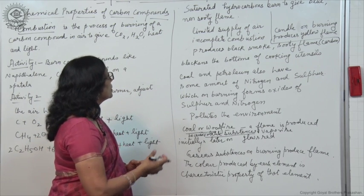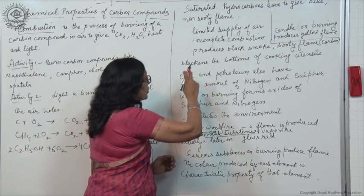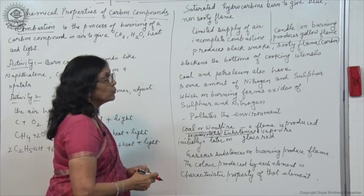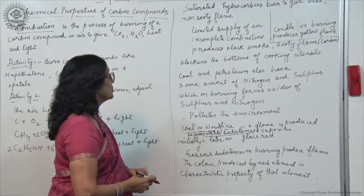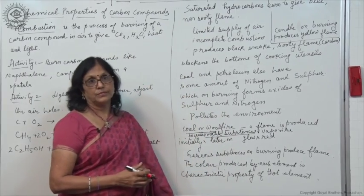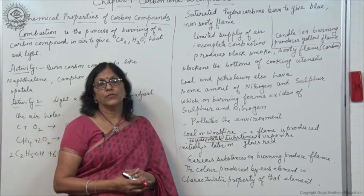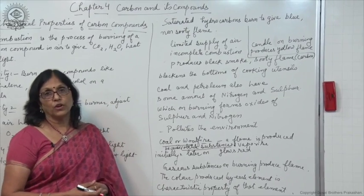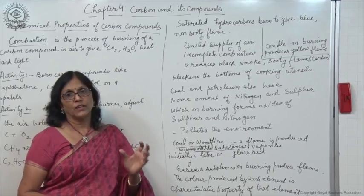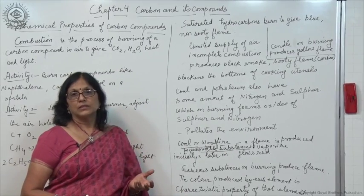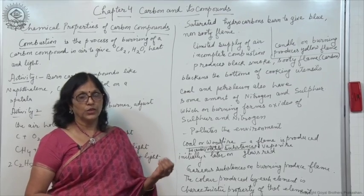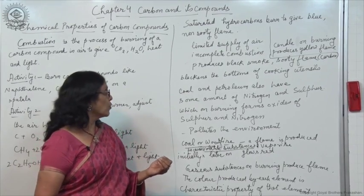Saturated hydrocarbons will produce black smoke and a sooty flame due to incomplete combustion, because carbon is formed. If in the kitchen the flame is smoky and yellow, the air supply is not sufficient. A sooty flame will be formed and it will blacken the bottom surface of the cooking utensils due to the smoky flame.